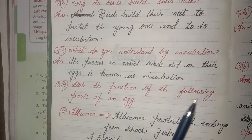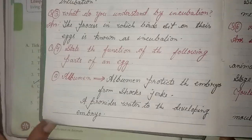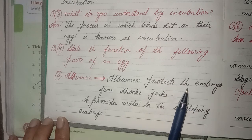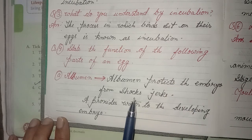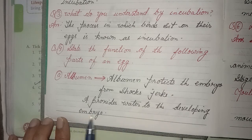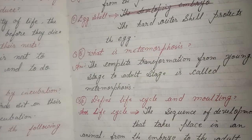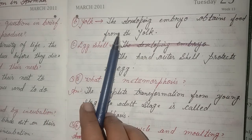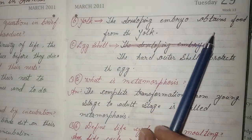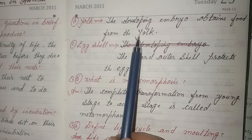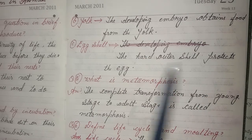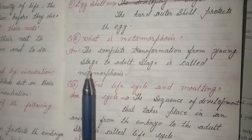Four, state the function of the following parts of an egg. Albumin: Albumin protects the embryo from shocks and jerks, and provides water to the developing embryo. Yolk: The developing embryo obtains food from the yolk. Egg shell: The hard outer shell protects the egg.